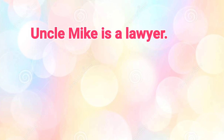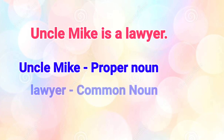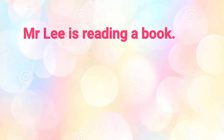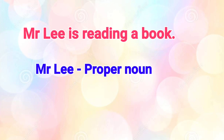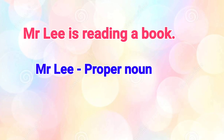'Uncle Mike is a lawyer.' Uncle Mike will always be written with a capital letter, so it is a proper noun. Lawyer is a common noun because it can be used for any person. 'Mr. Lee is reading a book.' Mr. Lee is a proper noun — it's the name of a particular person. Book is a common noun because the name of a specific book has not been mentioned; it can be any book.